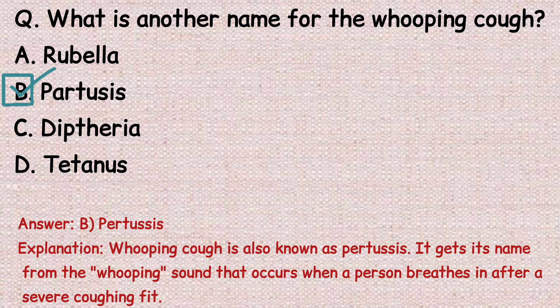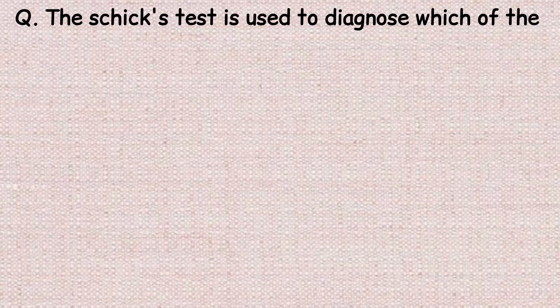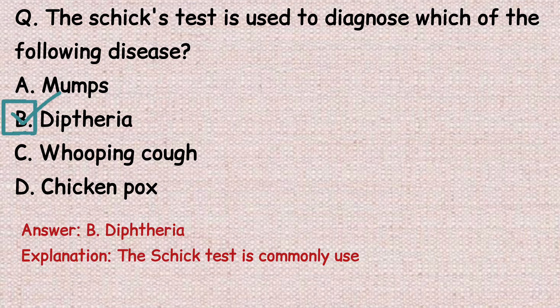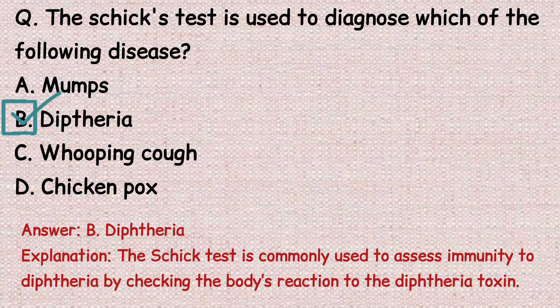The next question: the Schick's test is used to diagnose which of the following diseases? Option A: mumps. Option B: diphtheria. Option C: whooping cough. Option D: chickenpox. The correct answer is option B, diphtheria. The Schick's test is commonly used to assess immunity to diphtheria by checking the body's reaction to the diphtheria toxin.